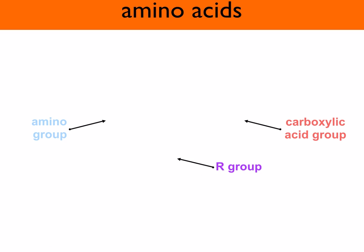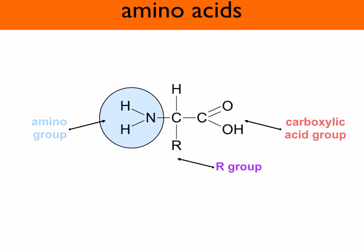Let's have a look at amino acids. Amino acids are the basic monomer units which combine to form proteins. Each amino acid has a central carbon — called the alpha carbon — to which four different groups are attached. The first group is the amino group, which is a basic group and is how amino acids get their name.